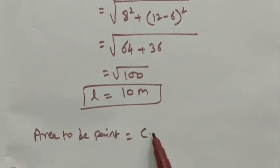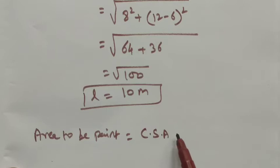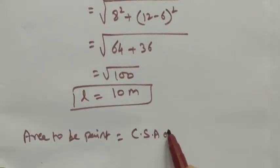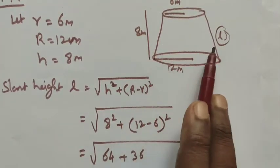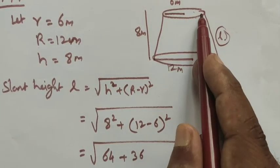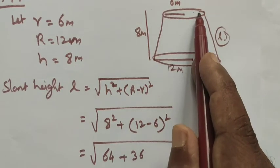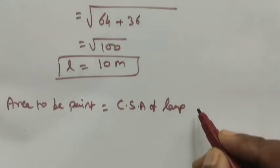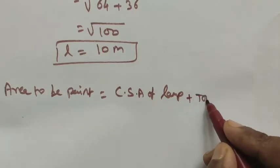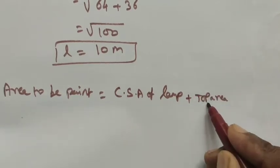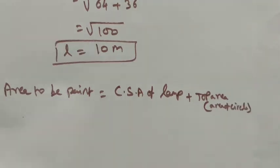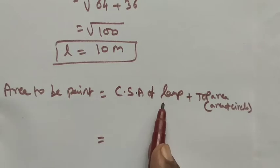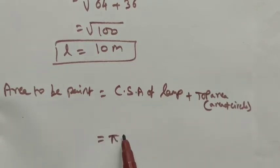Now we want to find the area to be painted. The area to be painted is the curved surface area of the frustum plus the top area. The lamp is in the shape of a frustum. The top is in the form of a circle, so the top area is the area of a circle. The curved surface area of the frustum of a cone is π(R + r) × l.